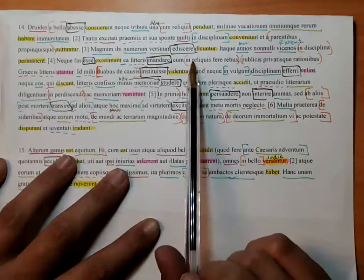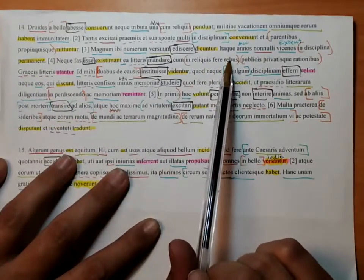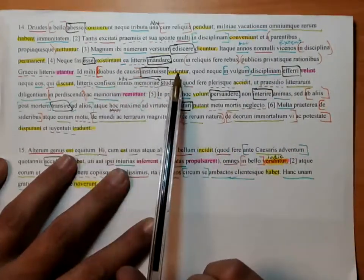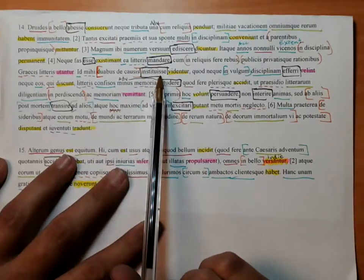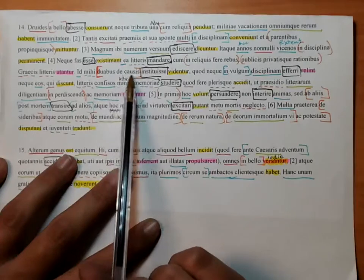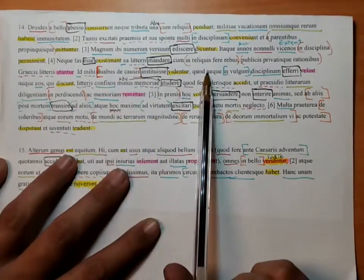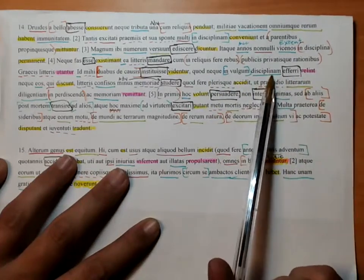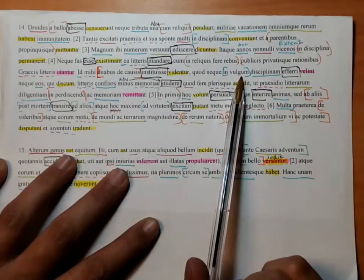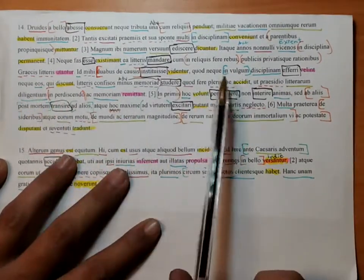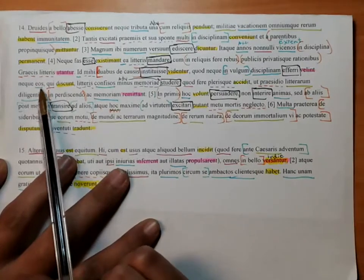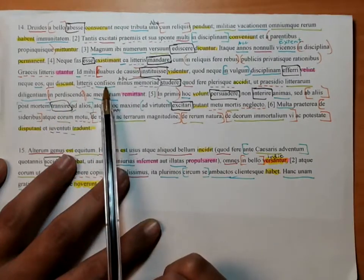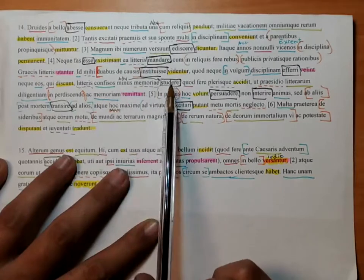They seem to me to have established this from two reasons: because they neither wish for their training to be brought into the common people, nor that those who are learning trust or rely on letters and direct their zeal towards their memory less.